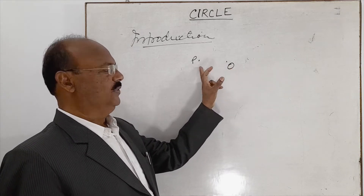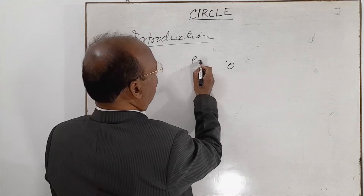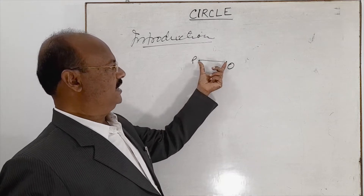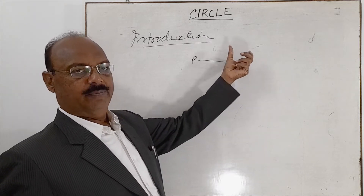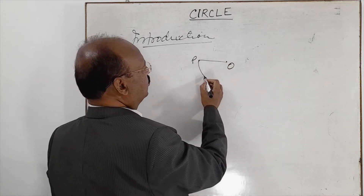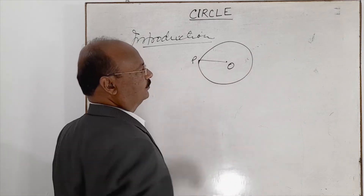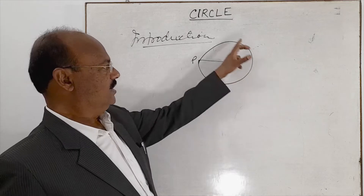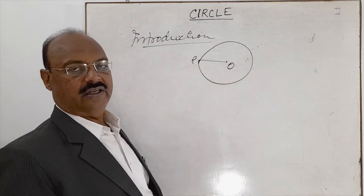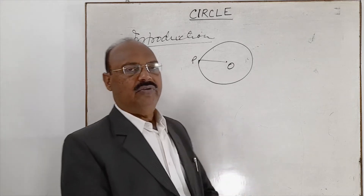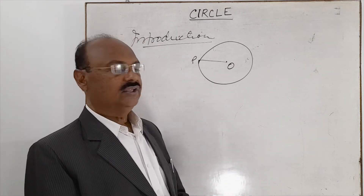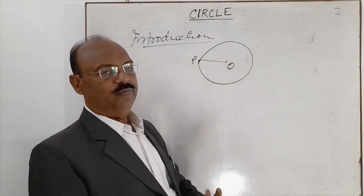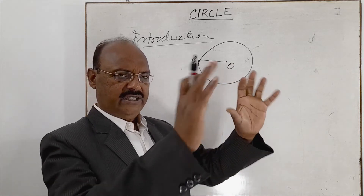Here O is the given point and P is the movable point, and the distance between these two points is OP. So P will move in such a way that the distance OP will always remain the same. The collection of these points, or the locus of point P, is known as a circle. In a very simple way, we can define a circle as a collection of points which are equidistant from a given point O — that is a continuous collection.